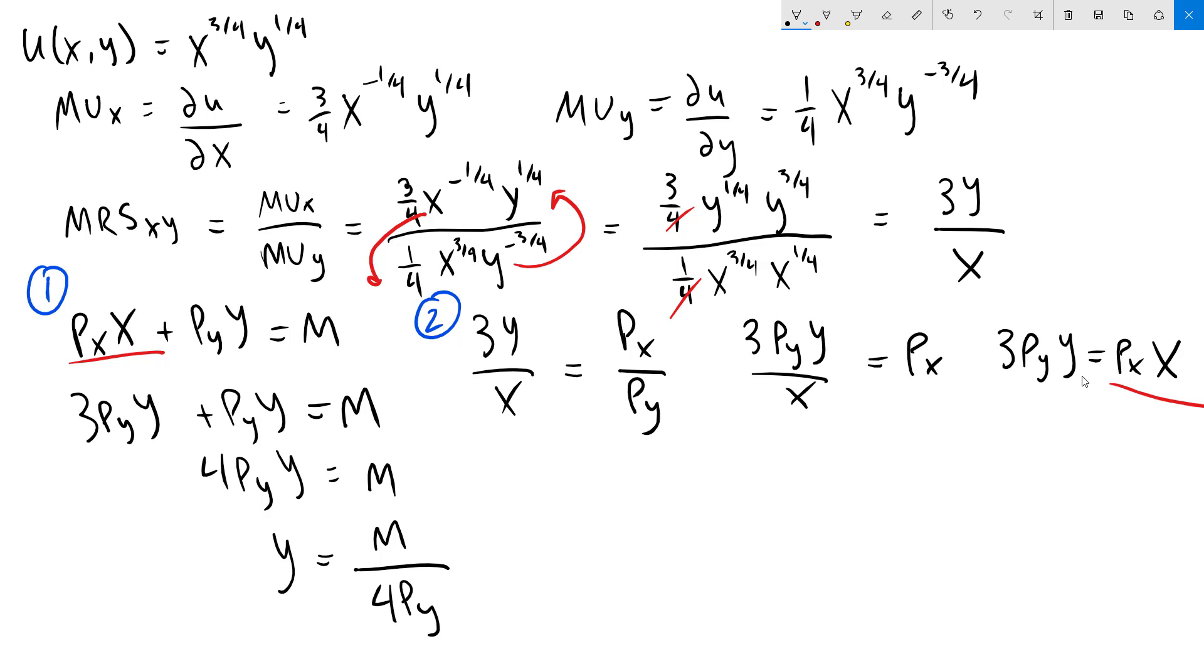To finish this off, I can now take that y and plug it into either of my equations and solve for x. I'm going to use the budget line. So we have Px x plus Py y, but we now know that y is m over 4 Py equals m. Pys cancel, and we're left with just m over 4 over here. I'm now going to subtract m over 4 from both sides,